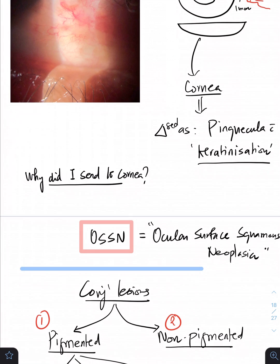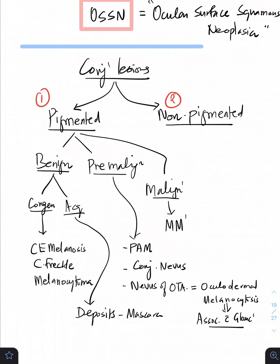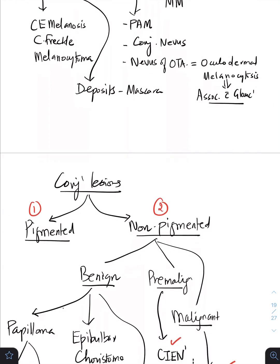Now to put things into perspective, any conjunctival lesion can be either pigmented or non-pigmented. We'll quickly talk about pigmented lesion which can be either benign, pre-malignant, and malignant. Malignant is going to be the malignant melanoma. The pre-malignant ones are going to be PAM, primary acquired melanosis, conjunctival nevus, nevus of ota. We always see conjunctival nevus but they very rarely transform into malignant lesion, so nothing to worry, but nevus of ota is something to be of concern. The benign lesions are going to be either congenital and acquired. The acquired can be the mascara deposits, the congenital ones are going to be the congenital freckle and congenital melanosis and melanocytoma. This is not our discussion today. Our discussion today is non-pigmented because this lesion is going to come under the non-pigmented lesion.